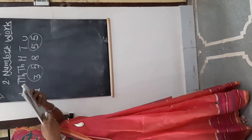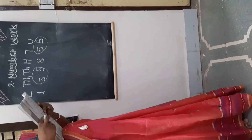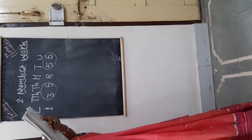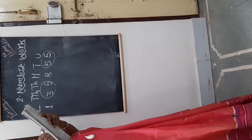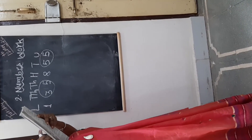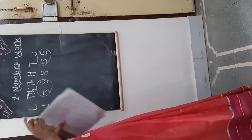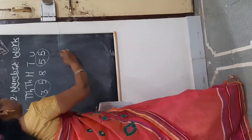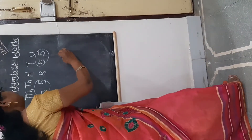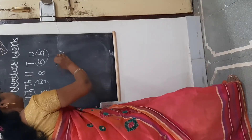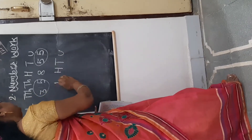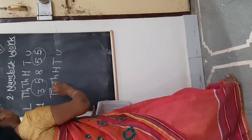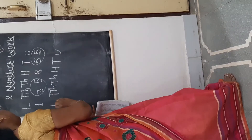The next number is 7 lakh, 27,000. Here also the lakh place is present, so first write down all the place names: 10, 100, 1000, 10,000, and lakh.